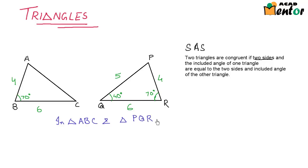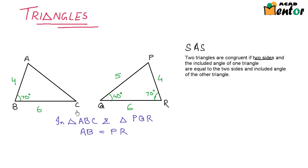First of all, AB is equal to PR — both are 4 units each. Also, BC is equal to QR — both are 6 units each.